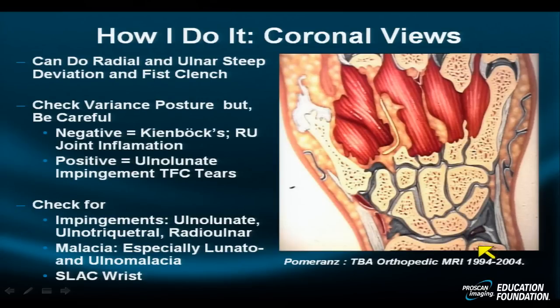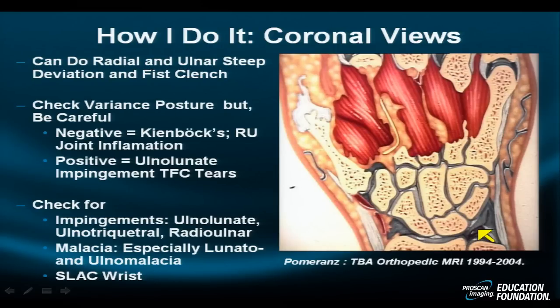We examine the adjacent cartilage surfaces for various degrees of triquetral chondromalacia, lunate chondromalacia, or ulnar chondromalacia to help decide the significance of these abutment syndromes. Eventually, with instability and rupture of intrinsic ligaments and destruction of the TFC, we may see scapholunate advanced collapse or a SLAC wrist, where there is severe advanced degeneration of the carpal bones. A sign of this is hypertrophy of the radial styloid, seen in the coronal projection.